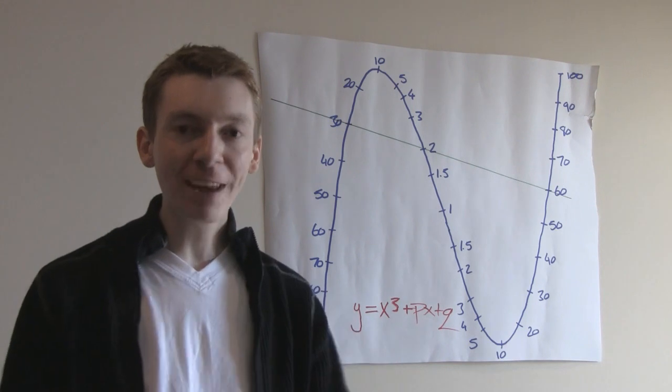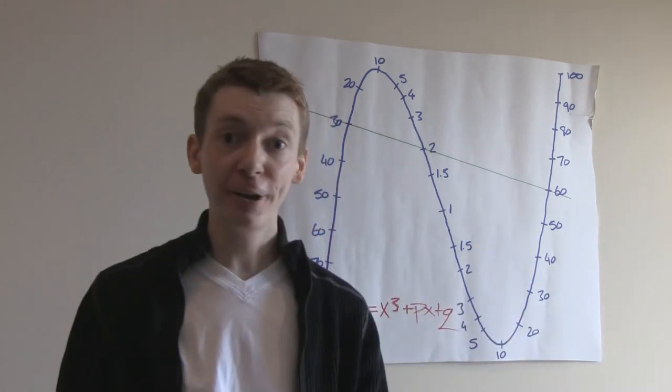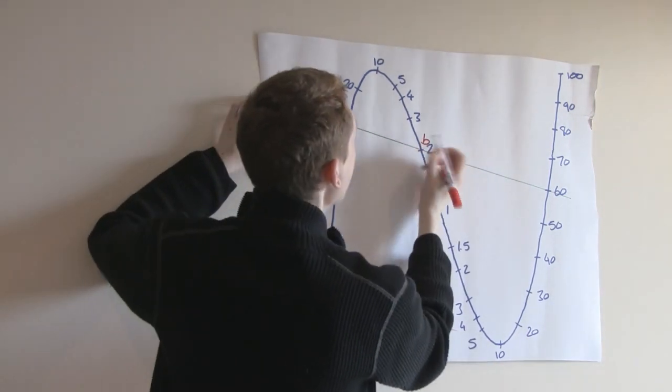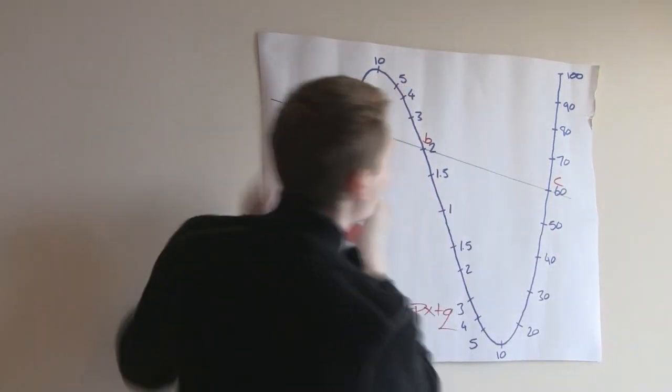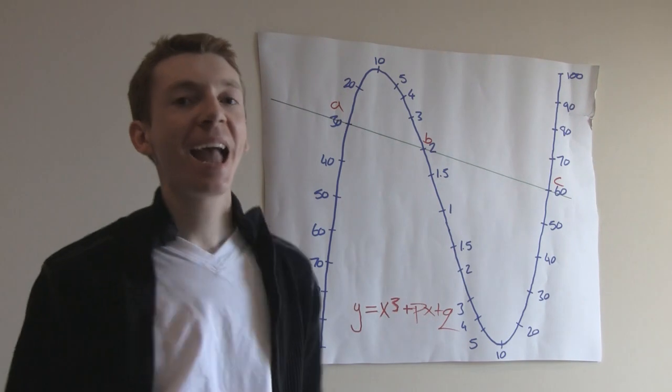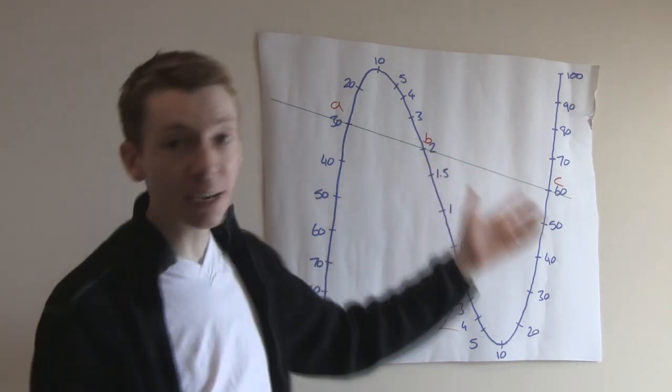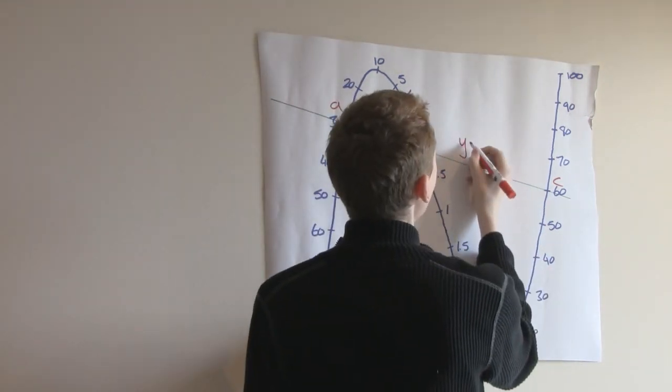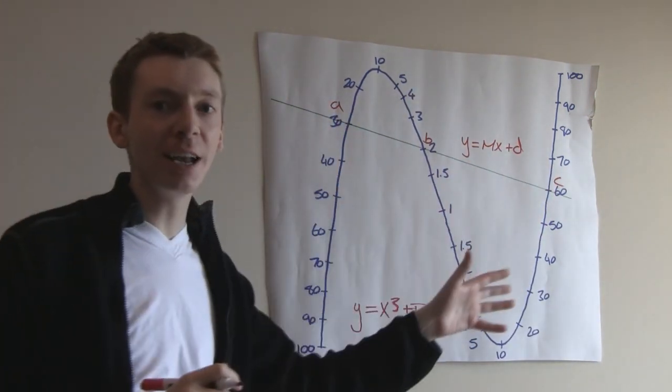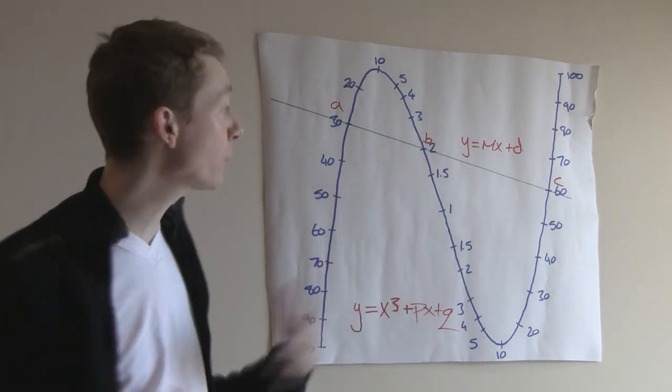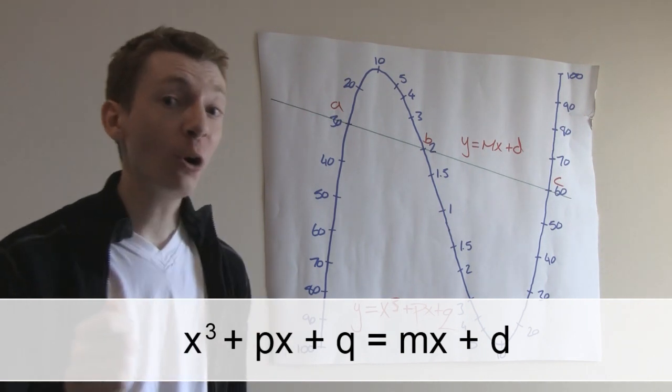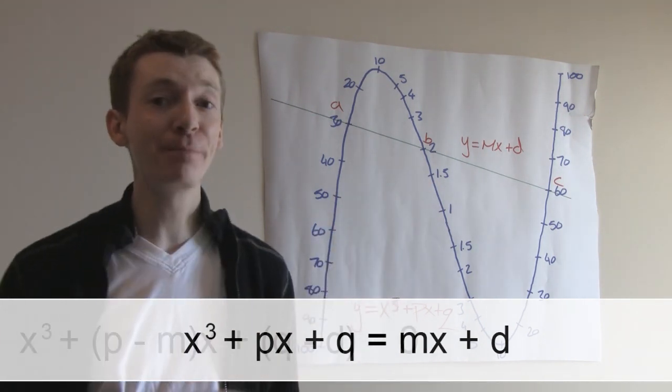So what I want to do is draw a straight line so it intersects with the curve at three points. Let's call those three points a, b and c. And we want to know the values of a, b and c. Now a straight line can be written as y equals mx plus d. So we want to know when that straight line intersects with the curve. In other words, we want to know when these two things are equal.